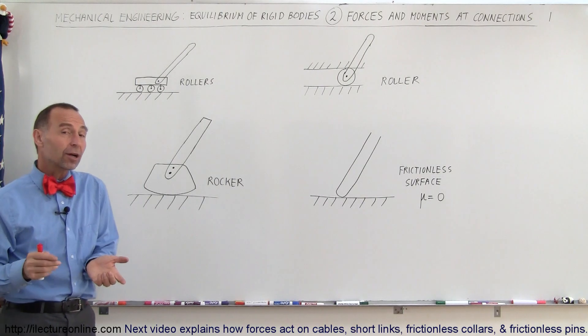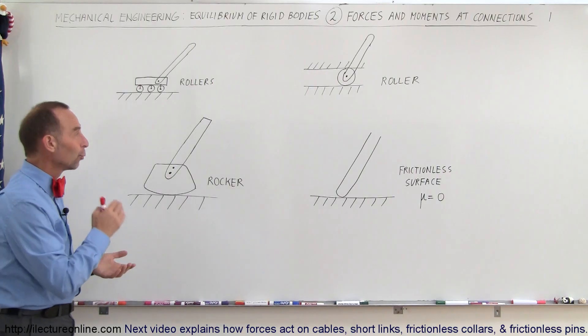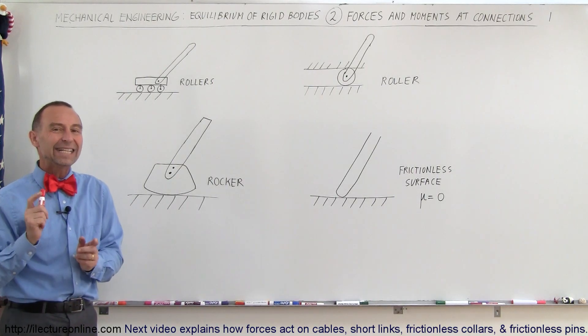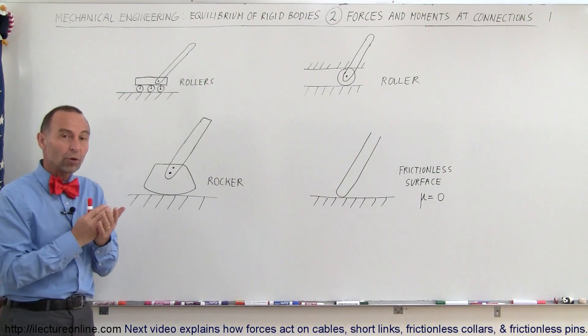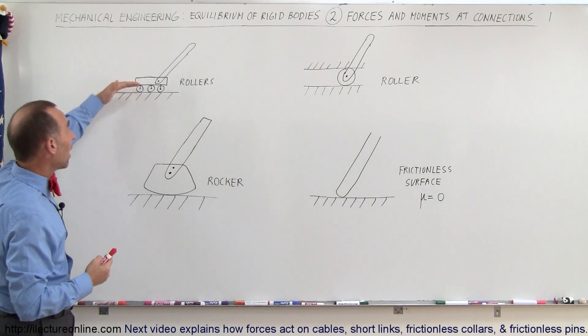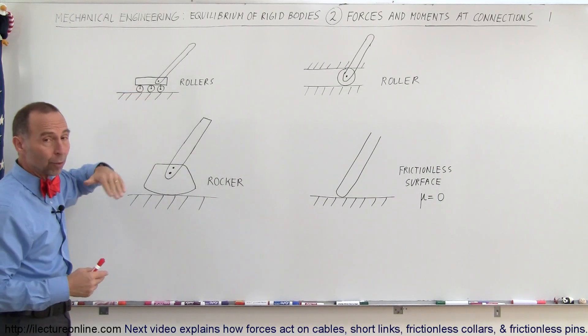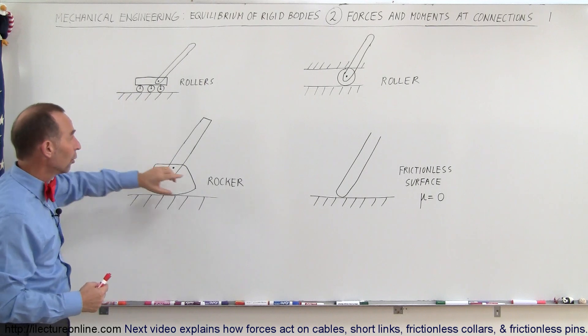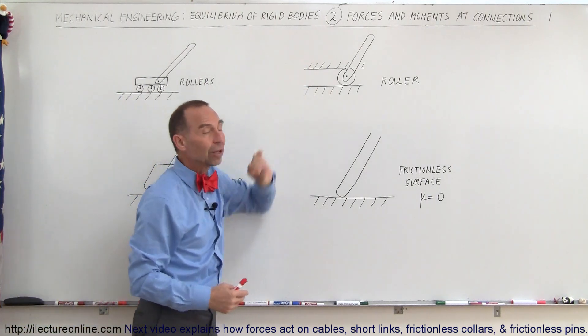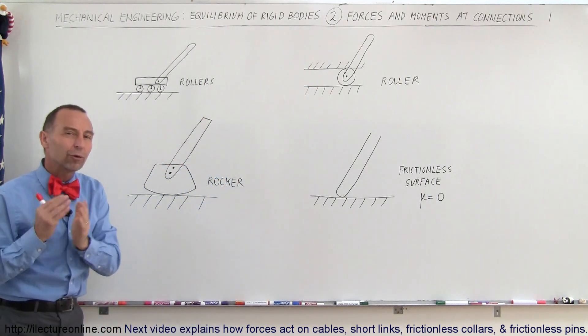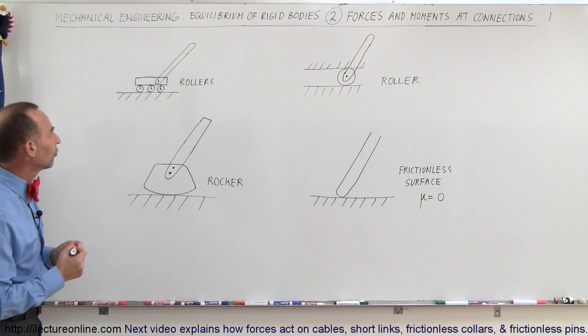The first set we're going to talk about are the easy ones. They're called the rollers, the rockers, and frictionless surfaces. In each single case, the reactionary force between the object being supported and the supporting environment such as the floor or guide rails is that the forces always are perpendicular to the surface.